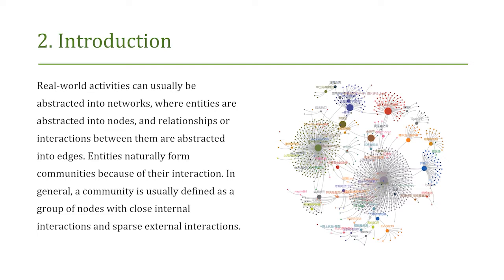Real-world activities can usually be abstracted into networks, where entities are abstracted into nodes, and the relationships or interactions between them are abstracted into edges. Entities naturally form communities because of their interactions. In general, a community is usually defined as a group of nodes with close internal interactions and sparse external interactions.